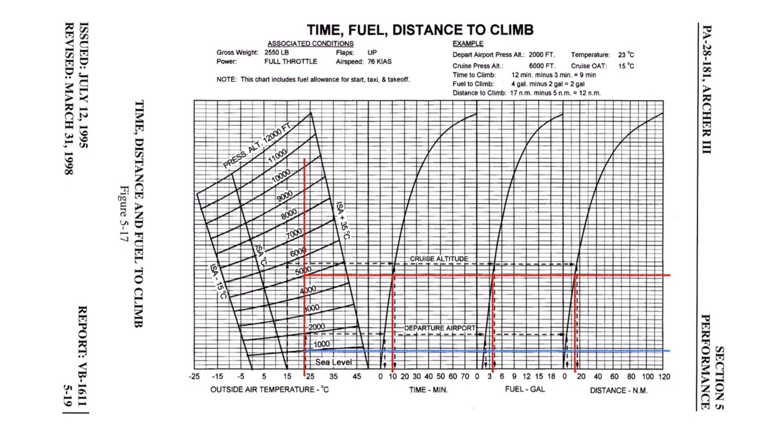We'll use blue this time. Now draw vertical lines where this line crosses the time, fuel, and distance references. Reading the results indicates the time to climb from sea level to 1,000 feet is 2 minutes, fuel usage is 1.5 gallons, and distance is 3 nautical miles. Now we'll complete the estimations by subtracting what is needed to climb to airport altitude from what is required to climb to cruise altitude. So: 10 minutes minus 2 minutes leaves 8 minutes; 4 gallons minus 1.5 gallons leaves 2.5 gallons; and 15 nautical miles minus 3 nautical miles leaves 12 nautical miles.